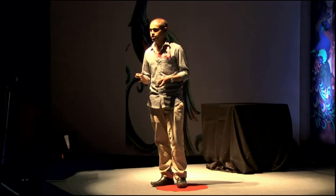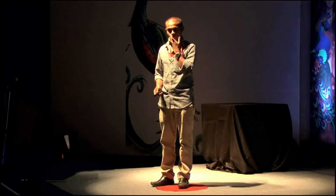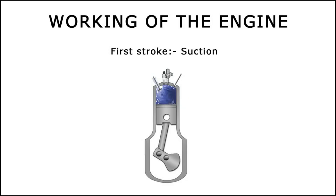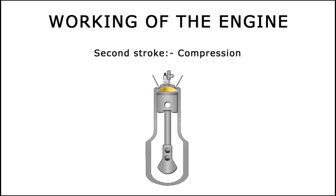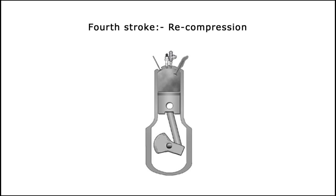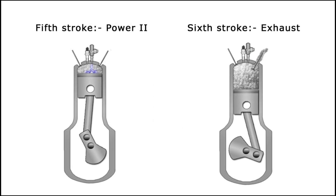There are six working strokes in our engine. The first three are similar to the conventional four stroke engine: the suction stroke where fuel and air enter, the compression stroke where both are compressed, and the third is the power stroke where the fuel is combusted by a spark. The fourth stroke is recompression — instead of expelling exhaust gases as in a conventional engine, we partially send out some residuals and recompress the remaining gas to attain sufficient temperature inside the engine.